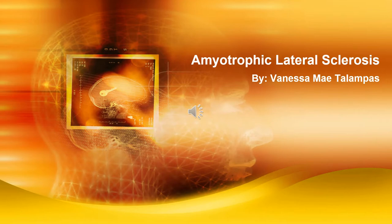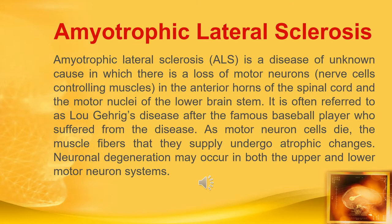Hello everyone, today I will be talking about a neurologic disorder, amyotrophic lateral sclerosis. Amyotrophic lateral sclerosis, or ALS, is a disease of unknown cause in which there is a loss of motor neurons — the nerve cells controlling muscles — in the anterior horns of the spinal cord and the motor nuclei of the lower brain stem. It is often referred to as Lou Gehrig's disease, after the famous baseball player who suffered from the disease.